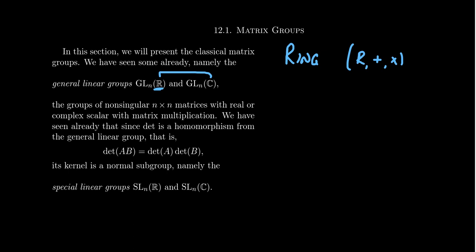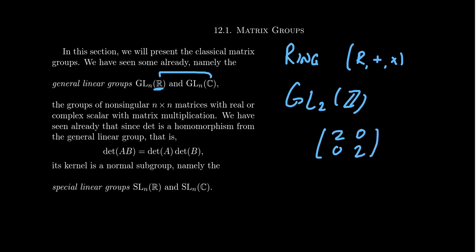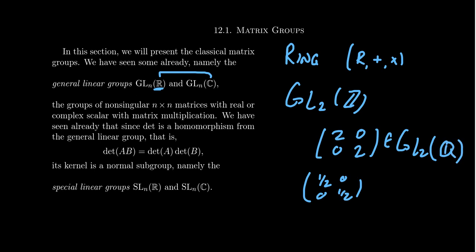You could interchange the scalars of a matrix to any type of ring, and the general linear group would be the set of invertible matrices with that scalar. For example, GL2 of Z consists of two-by-two integer matrices that have inverses. You have to be careful: the matrix with entries 2, 0, 0, 2 doesn't have an inverse inside GL2(Z) because the inverse would be 1/2, 0, 0, 1/2 — not integers. So that matrix belongs to GL2(Q) but not GL2(Z). The existence of a matrix in the group depends on whether its inverse also belongs to that family.